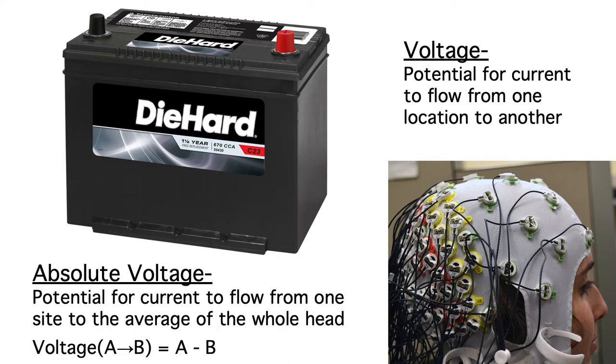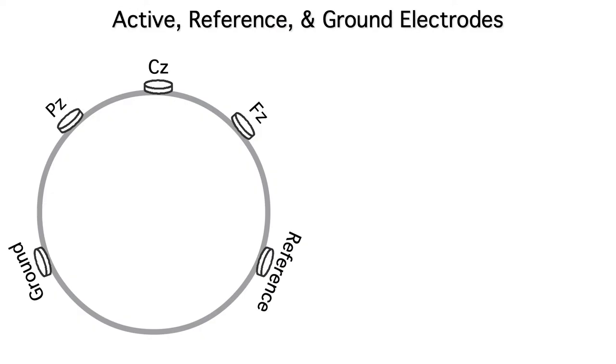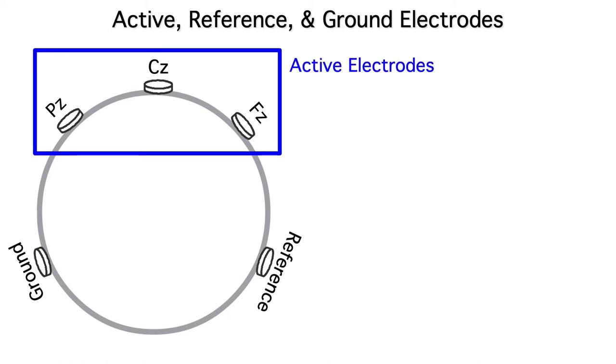Now let's talk about how the EEG is actually recorded. To get one channel of EEG, you actually need three electrodes: active, reference, and ground. For example, imagine that we wanted to record from FZ, CZ, and PZ. These would be our active electrodes.